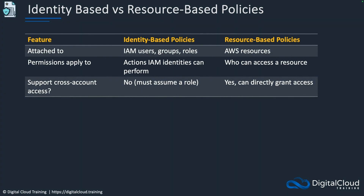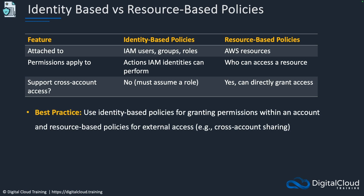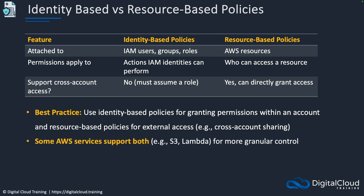To summarize: identity-based policies are applied to users, groups, and roles; resource-based policies are applied directly to resources, and not all services support them. Both define the actions that can be performed. For identity-based policies, permissions are granted to the identity the policy is applied to; for resource-based policies, it can be everyone or a specified principal. For cross-account access, identity-based policies require assuming roles, whereas resource-based policies allow direct cross-account access. Best practice is to use identity-based policies for permissions within an account and resource-based policies for external access like cross-account sharing. Some services, like S3 and Lambda, support both for more granular control.